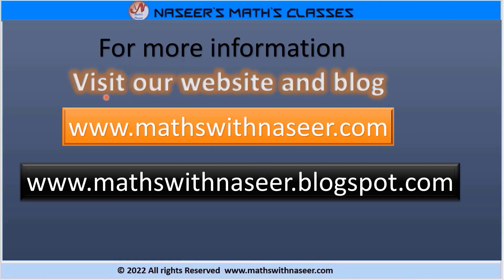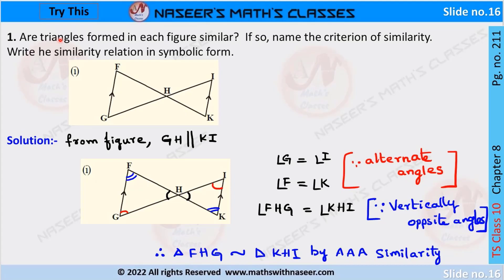For more information visit our website www.mathswithnaseer.com and blog www.mathswithnaseerblogspot.com. We will discuss the Try This problem, page number 211, Chapter 8, Similar Triangles. Are triangles formed in each figure similar? If so, name the criteria of similarity and write the similarity relation in symbolic form.